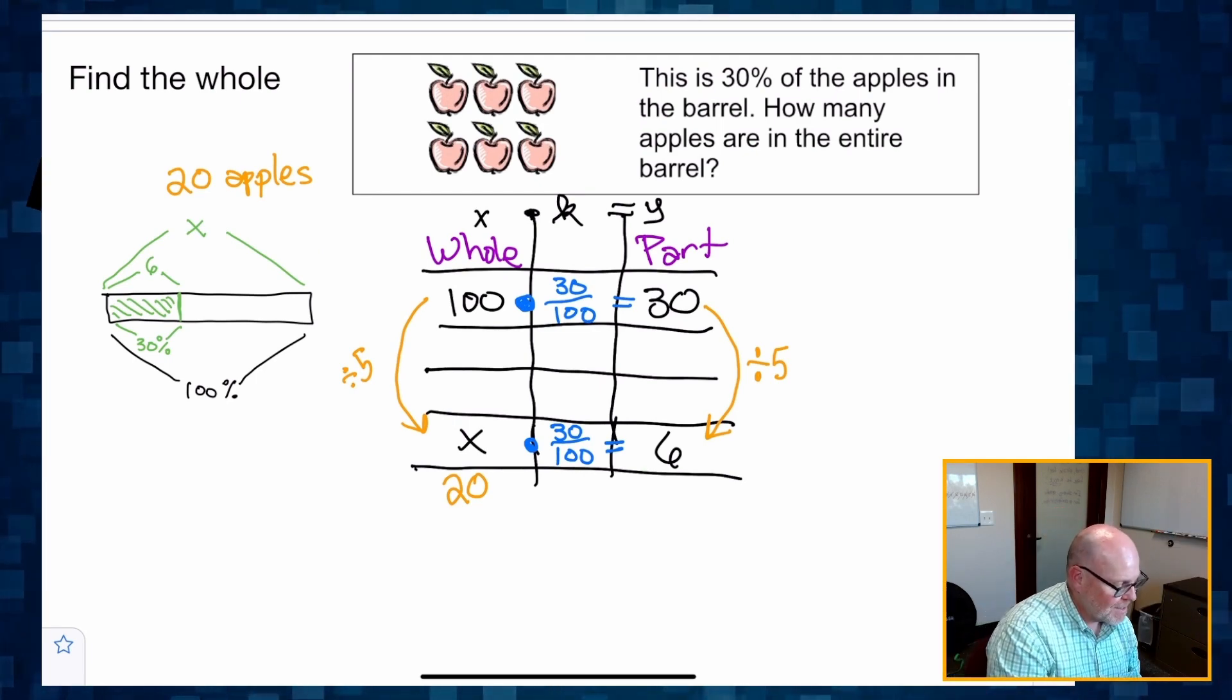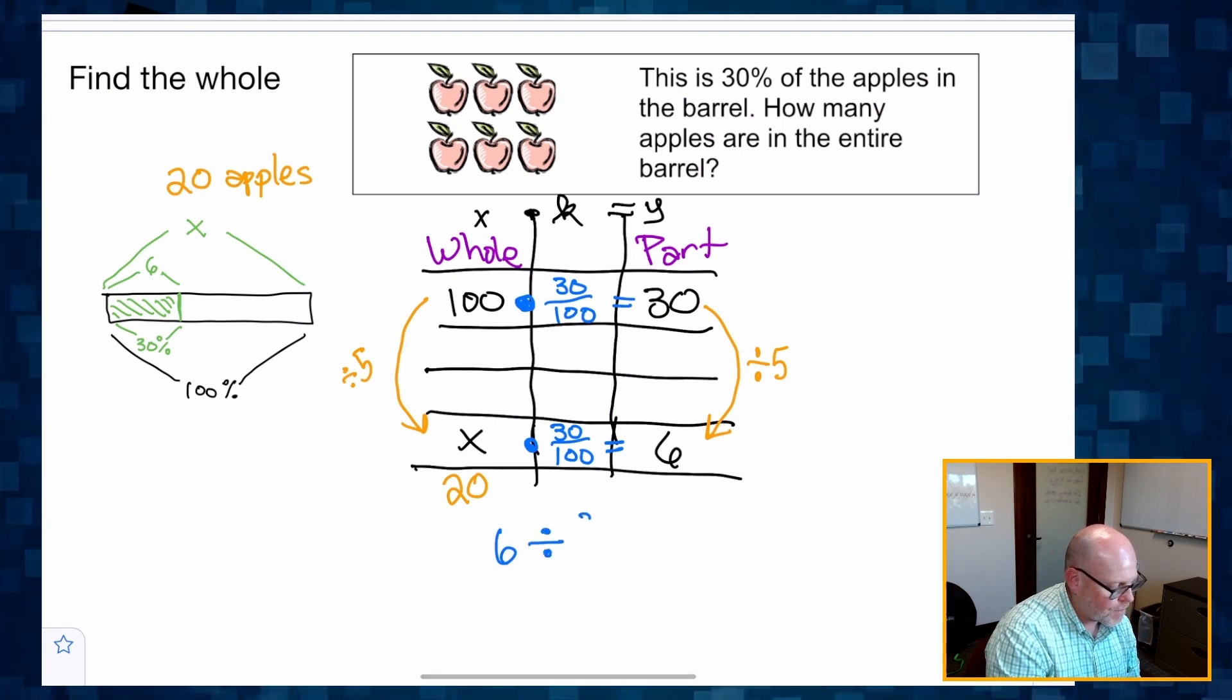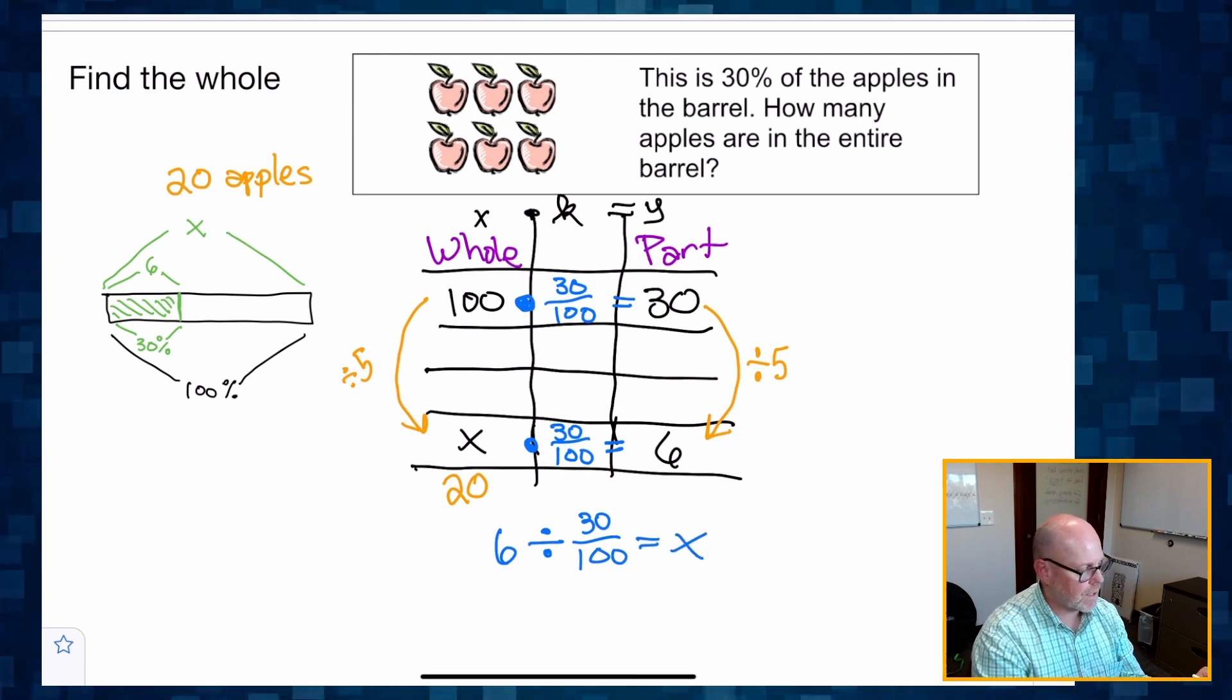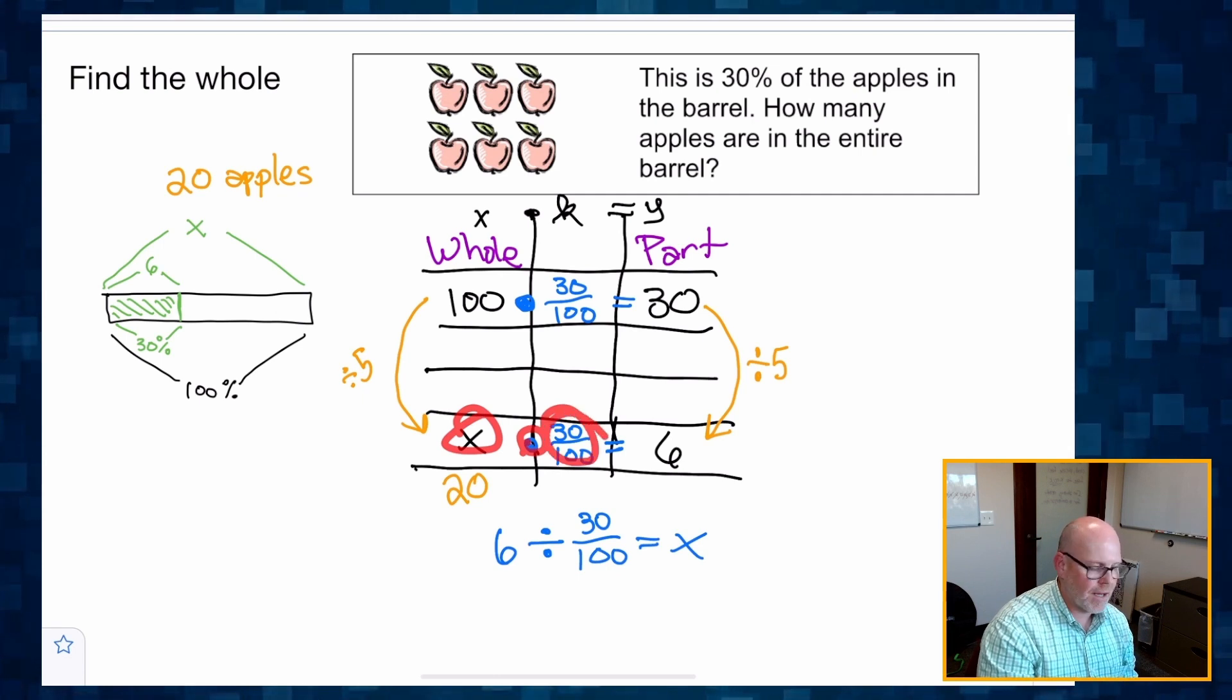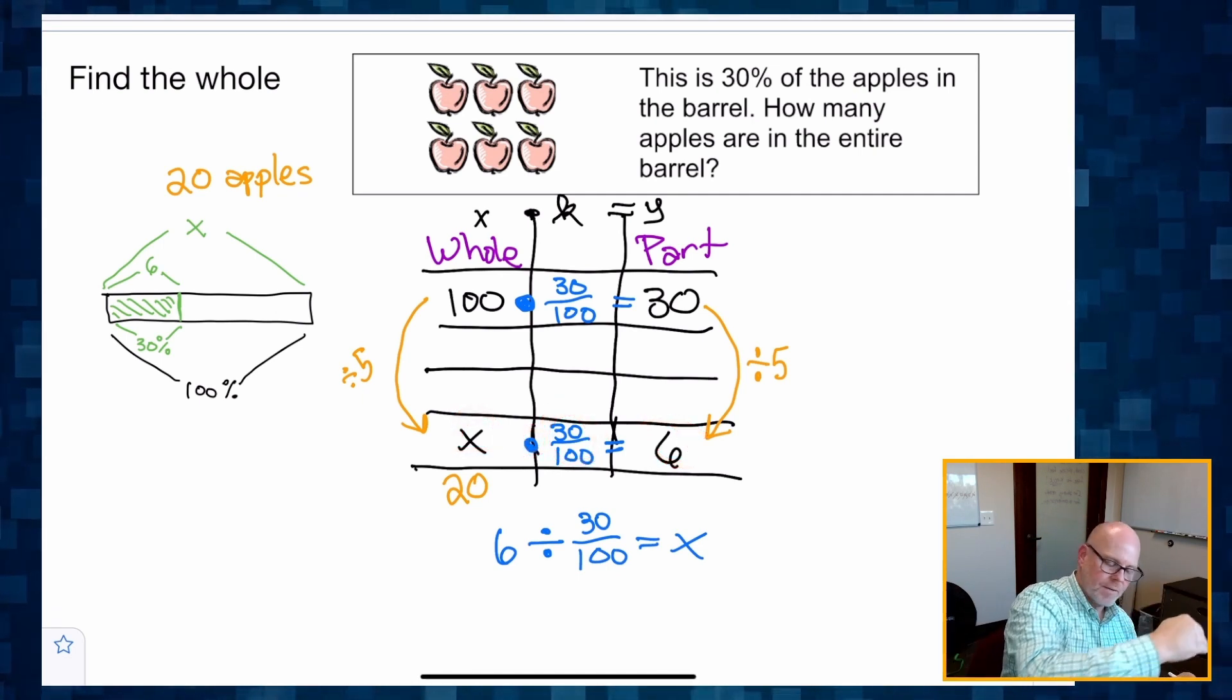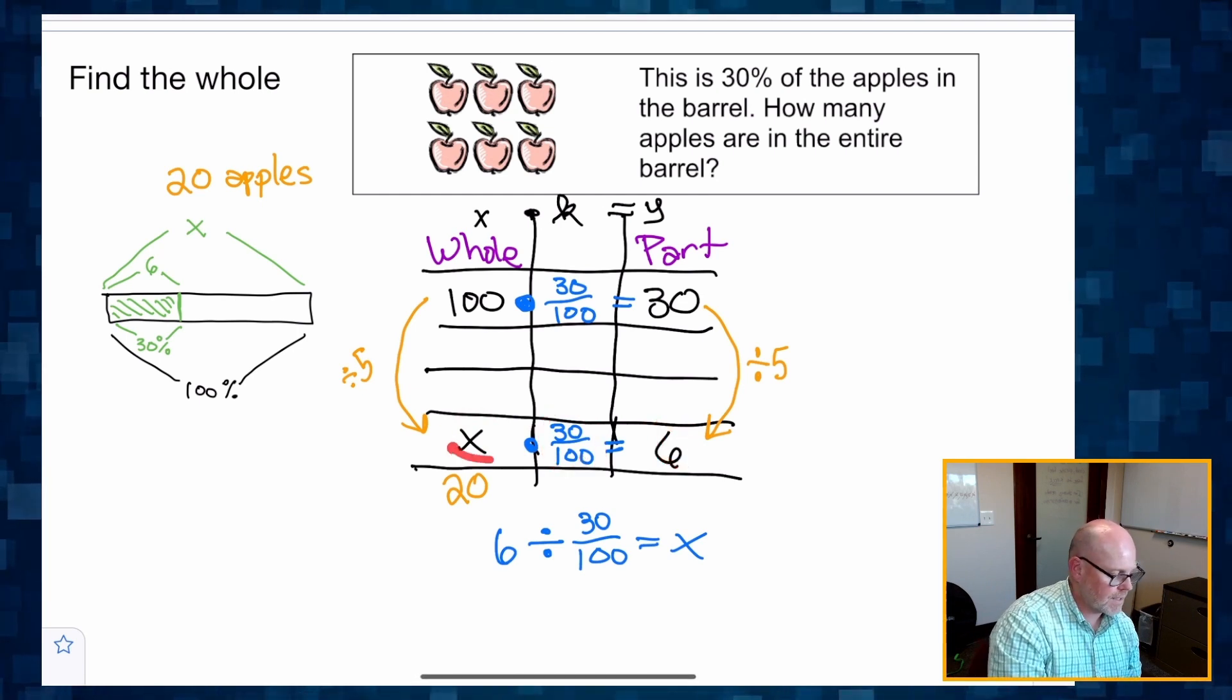Well, besides the vertical that we've already done, well, we're going to do six divided by 30 hundredths is going to give us x. Because we know that if x times 30 hundredths gives us six, using division, six divided by 30 hundredths gives us x.